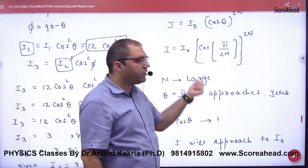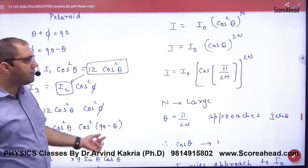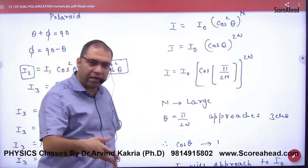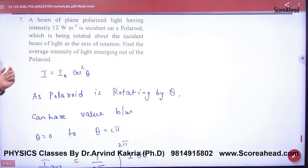So what will the answer be? I₀/2 will come. Same intensity will come. That's how you determine the intensity for large N.